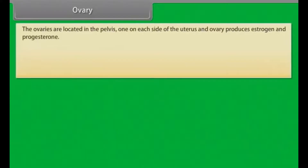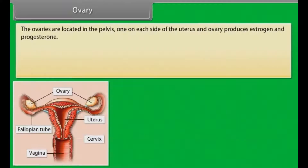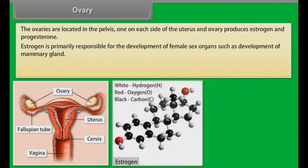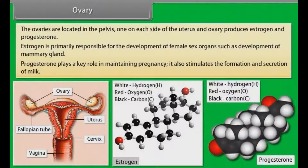The ovaries are located in the pelvis, one on each side of the uterus. An ovary produces estrogen and progesterone. Estrogen is primarily responsible for the development of female sex organs, such as the development of mammary glands. Progesterone plays a key role in maintaining pregnancy and also stimulates the formation and secretion of milk.